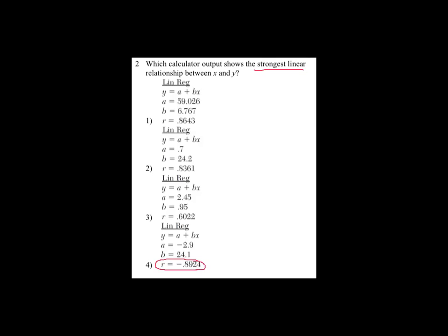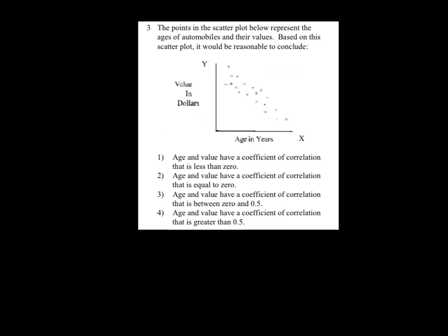Well, they've presented us here with a scatterplot, and based on a scatterplot, it'd be reasonable to conclude what? Let's see. Choice number one says that the age and value have a correlation coefficient less than zero. I like that one right there.